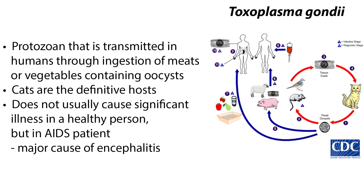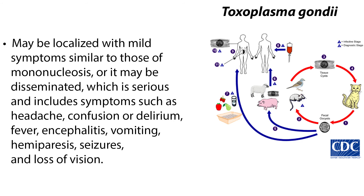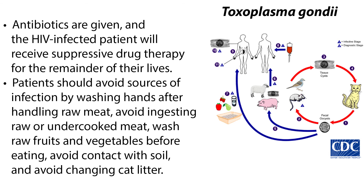Toxoplasma gondii is a protozoan transmitted in humans through ingestion of meats or vegetables containing oocysts. Animals can also be infected, but cats are the definitive hosts. In immunocompromised AIDS patients it is a major cause of encephalitis. The infection may be localized with mild symptoms similar to mononucleosis, or it may be disseminated, including symptoms such as headache, confusion or delirium, fever, encephalitis, vomiting, hemiparesis, seizures, and loss of vision. Antibiotics are given and the HIV-infected patient will receive suppressive drug therapy for the remainder of their lives.